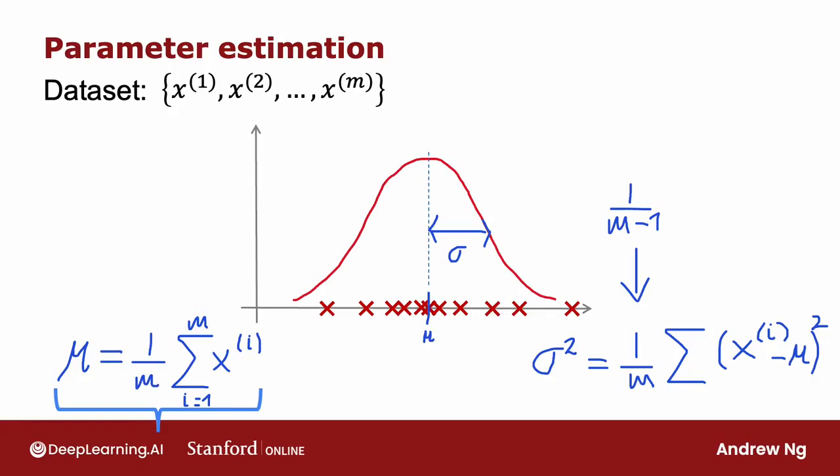I always use 1 over m, but there are some other properties of dividing by m minus 1 that some statisticians prefer. But if you don't understand what I just said, don't worry about it. All you need to know is that if you set mu according to this formula and sigma squared according to this formula, you get a pretty good estimate of mu and sigma. In particular, you get a Gaussian distribution that will be a plausible probability distribution in terms of what probability distribution the training examples had come from.